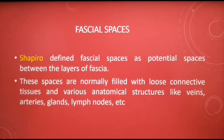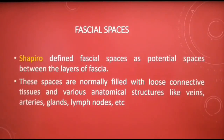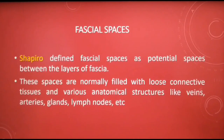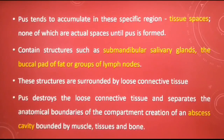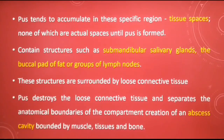Fascia is a band or sheet of connective tissue primarily made up of collagen, found beneath the skin, that attaches, stabilizes, encloses, and separates muscles and other internal organs. Facial spaces are potential spaces that exist between the fascia and underlying organs, separated by barriers of muscle, bone, or fascia. No such space exists unless pus accumulates in these specific regions referred to as tissue spaces.